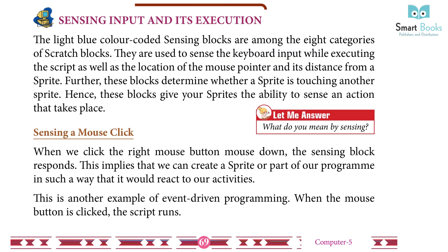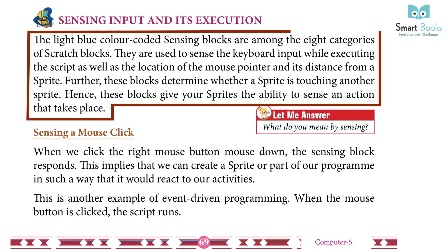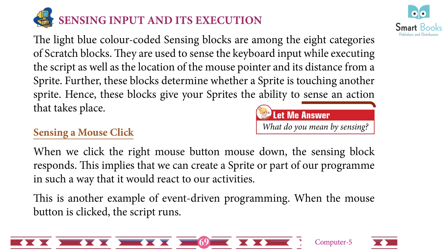Sensing Input and Its Execution: The light blue color-coded sensing blocks are among the eight categories of Scratch blocks. They are used to sense keyboard input while executing the script, as well as the location of the mouse pointer and its distance from the sprite. Further, these blocks determine whether a sprite is touching another sprite, giving your sprites the ability to sense an action that takes place.